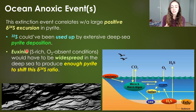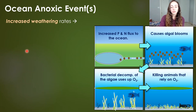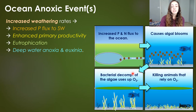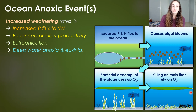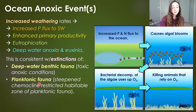Do we know what caused the anoxia and euxinia during this time? Increased weathering rates would have increased phosphorus flux to seawater, which is a major nutrient, and that would have enhanced primary productivity, leading to eutrophication or blooms that would cause deepwater anoxia and euxinia, because bacterial decomposition of the algal bloom uses up all the oxygen. These conditions would be consistent with the types of extinctions that happened: deepwater benthic fauna were heavily affected, and planktonic fauna were also hit hard because the steepened chemocline restricted those fauna.